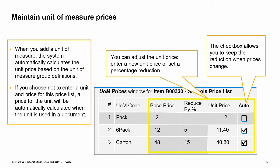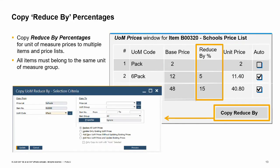Select the auto checkbox in the row if you want the unit of measure prices to be updated according to the discount reduction whenever the inventory unit of measure prices are updated in the price list window. If the auto checkbox is not selected, the unit of measure prices are not updated when you update the prices of the inventory unit of measure in the price list window. Another nice feature in the unit of measure price window is that you can copy the reduce by percentages to other items that share the same unit of measure group, using the copy reduce by button.